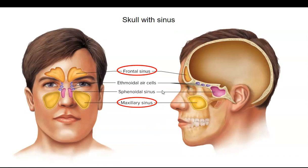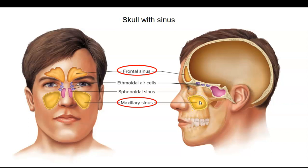So here are the two sinuses I'd like you to know. The frontal sinus, which is encased by the frontal bone. And then the maxillary sinus — that's a cavity or opening inside the maxilla. Sometimes if you get a cold and you have a toothache, it's because you have infection in your maxillary sinus that's pushing on the nerves that innervate your teeth.